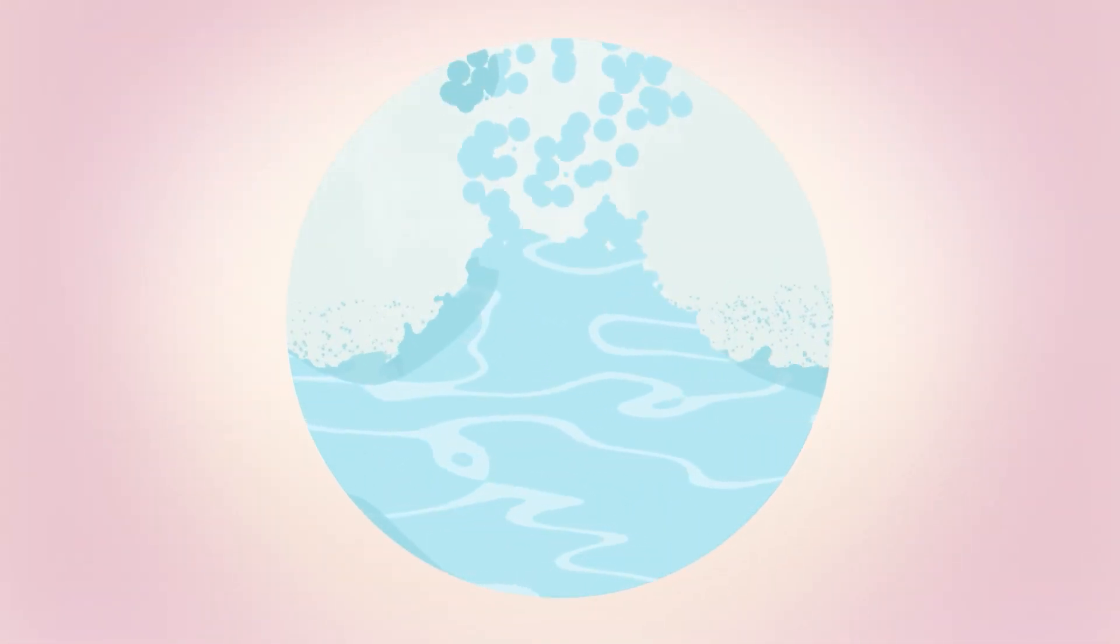At ultrasonic frequencies, when we make these ripples big enough, the water disperses and breaks into droplets, similar to a breaking wave. These droplets rise up to the surface and become the mist that feeds our plant roots.